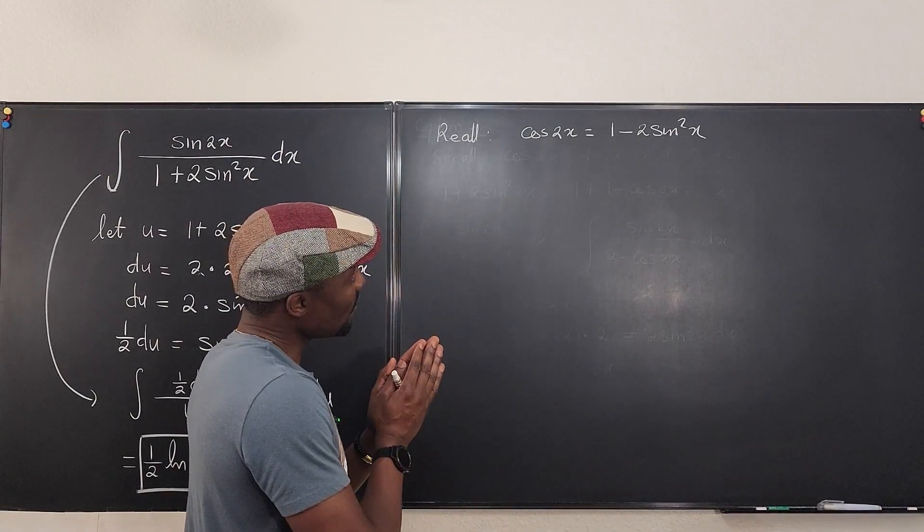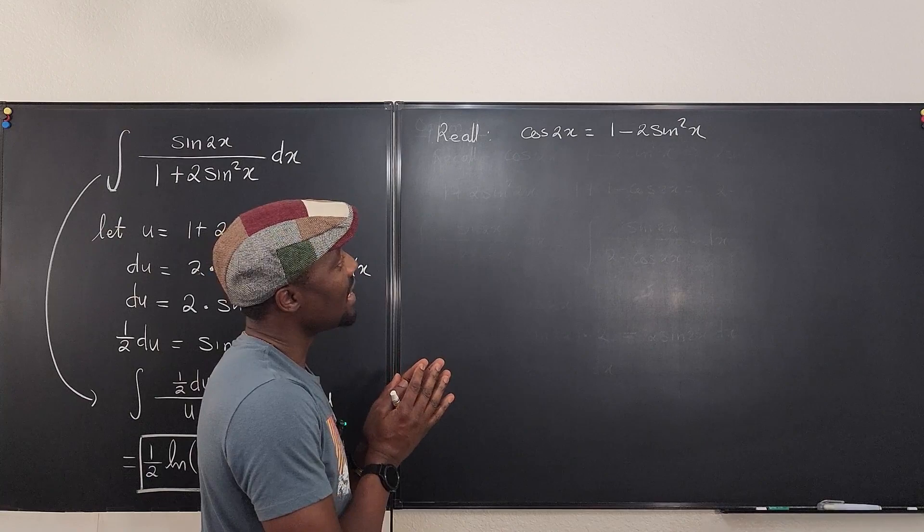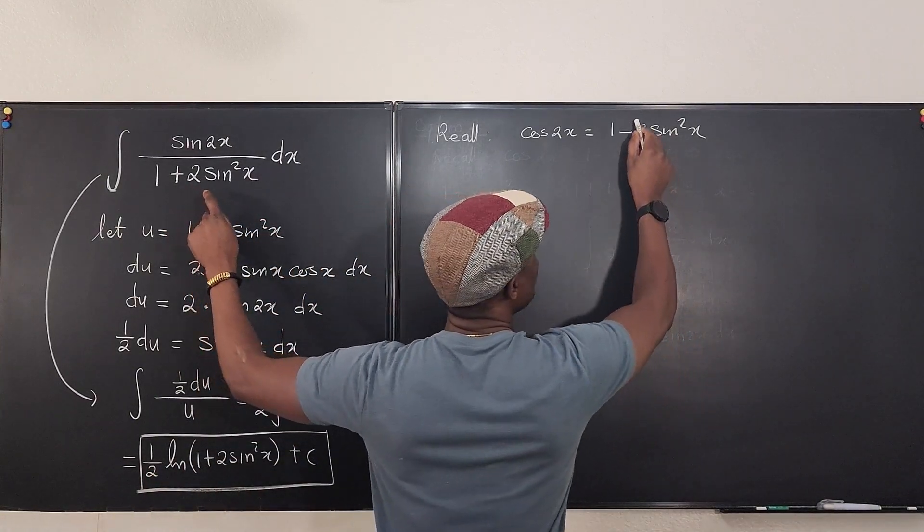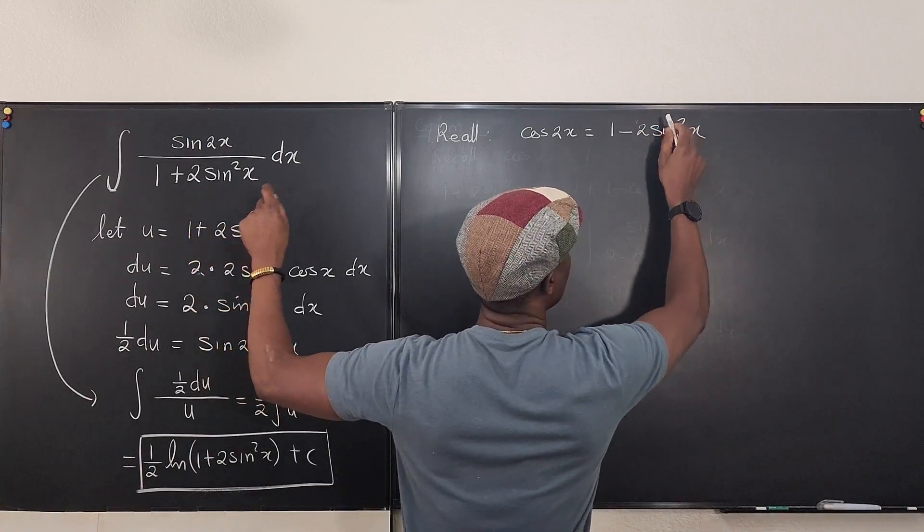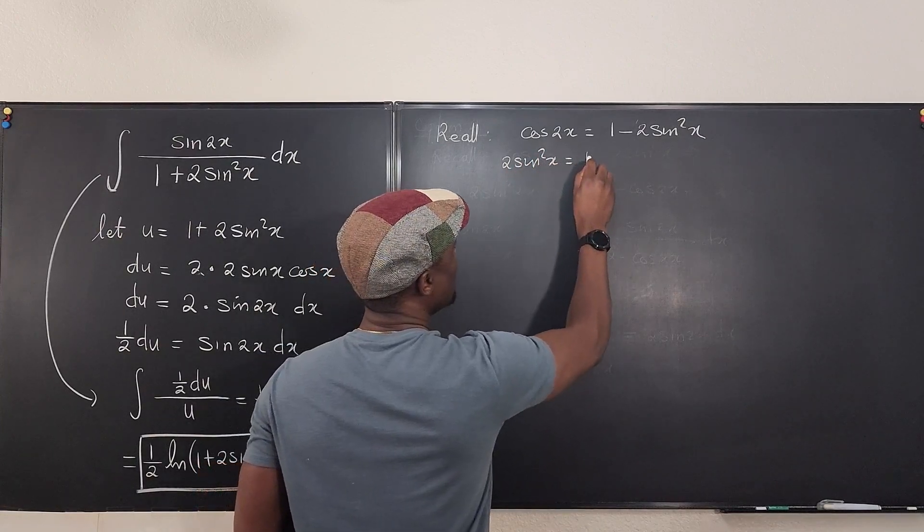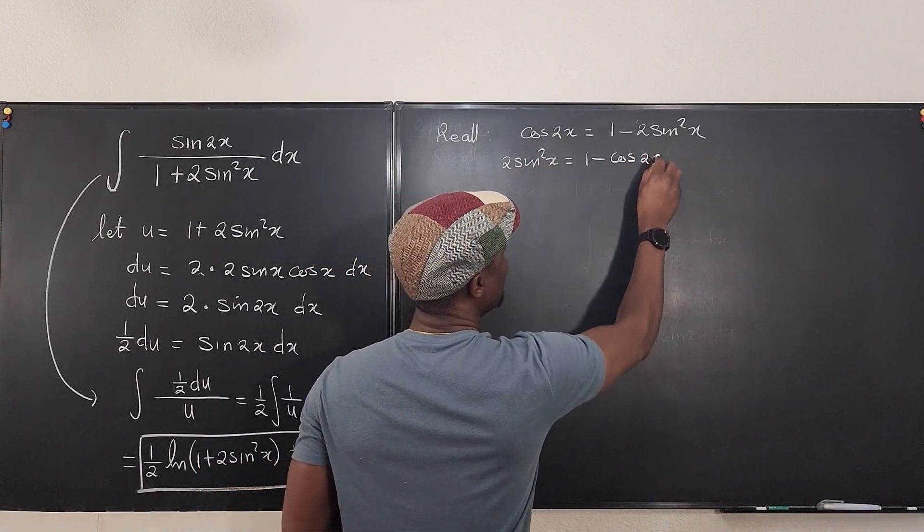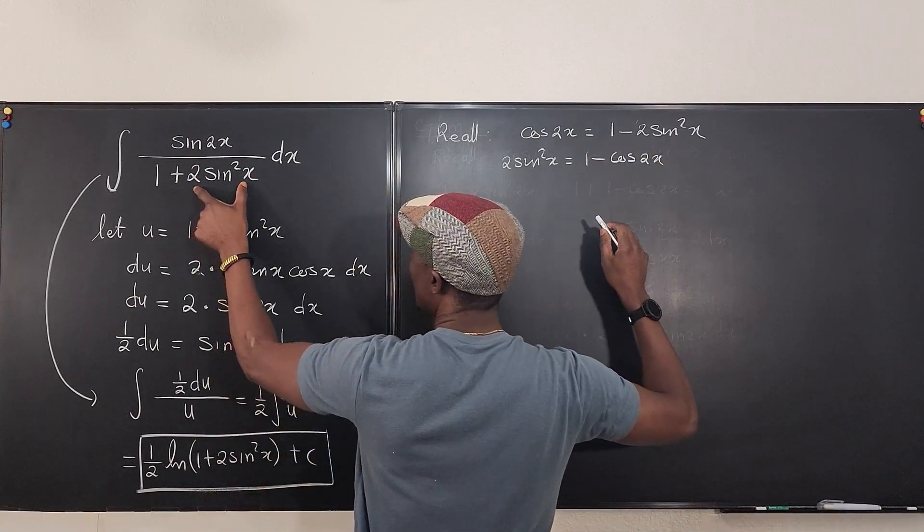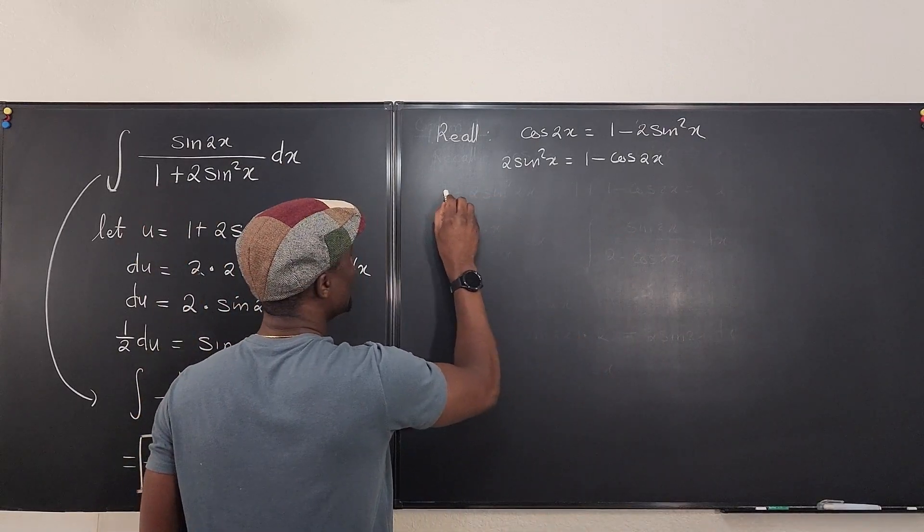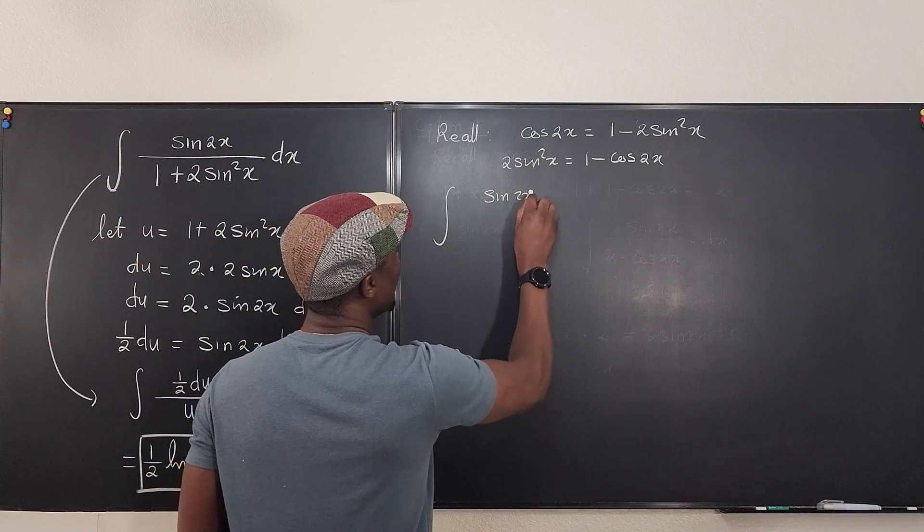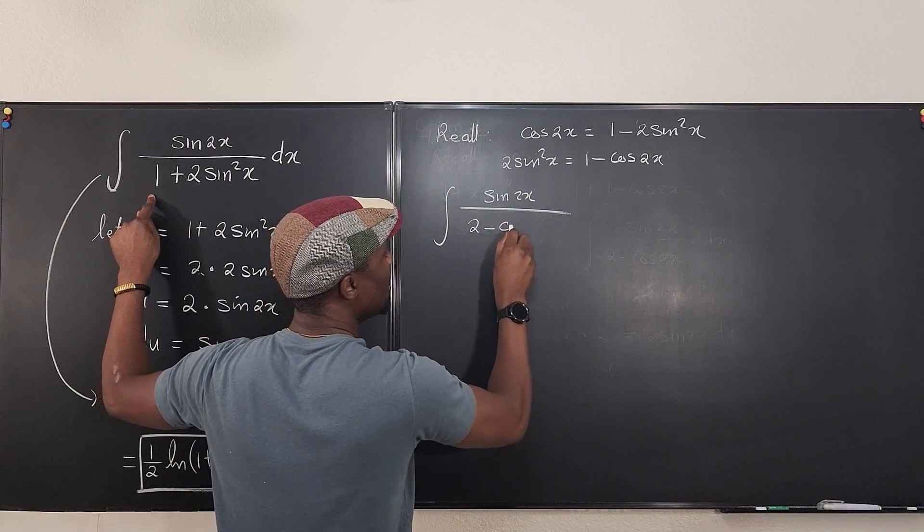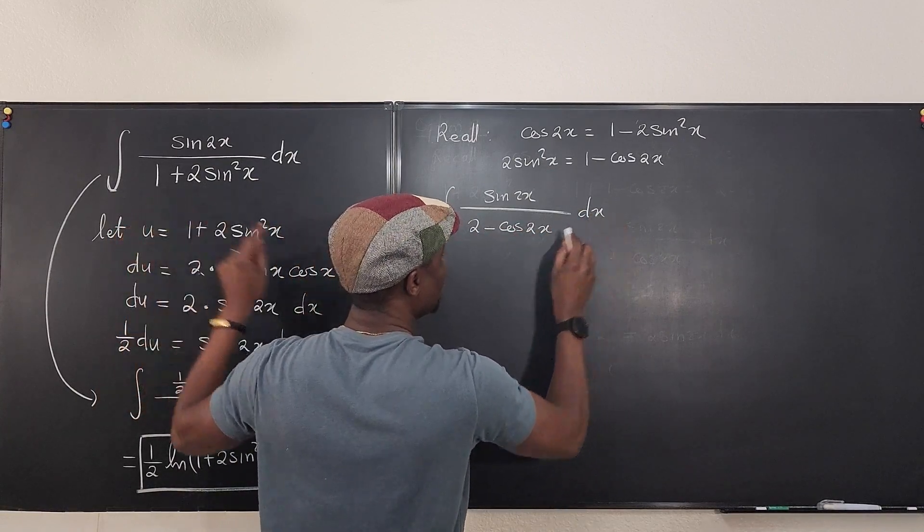What did I do? I decided to rewrite this expression. I isolated this because from here, I can say that 2 sine squared x will be 1 minus cosine 2x. So I took this expression and I replaced this with this so that what I had here, the integral became sine 2x over 1 plus this, which made it 2 minus cosine 2x dx.